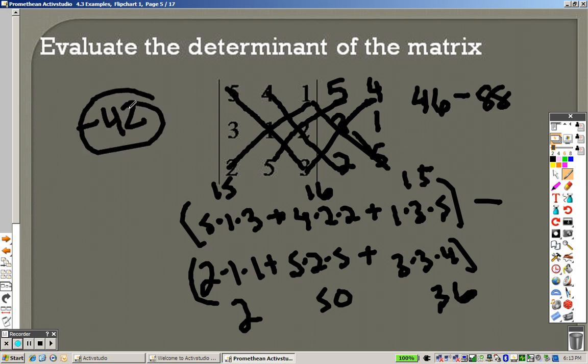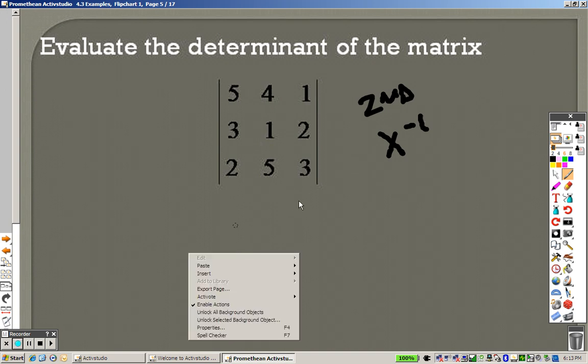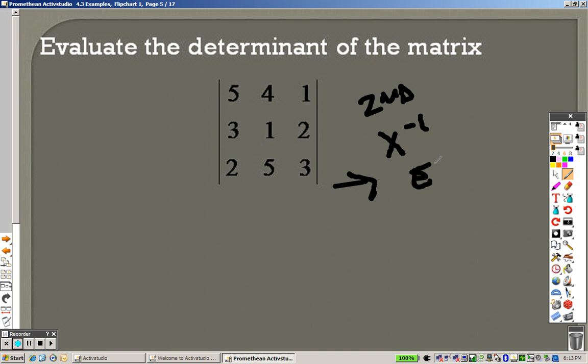Now, the determinant of a 3 by 3, it is much simpler to do on the calculator than to do all that work. So, once again, press 2nd, X to the negative 1. Go over until you get to edit. And this time, go down to B. Press down until you get to B, and let's fill it in there. So, press enter. This is a 3, so press 3, enter, 3 matrix. It's a 3 by 3.